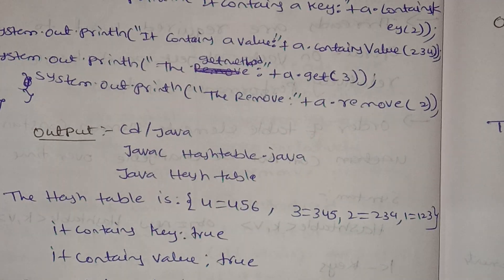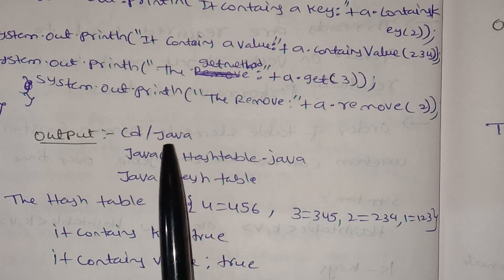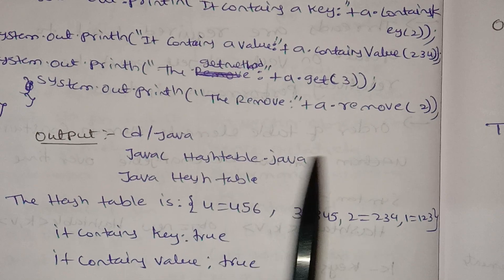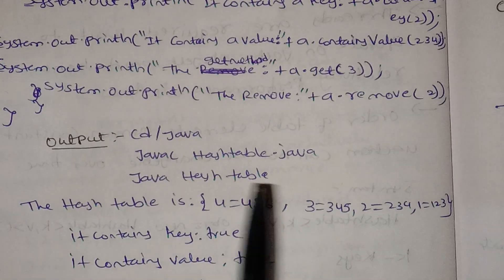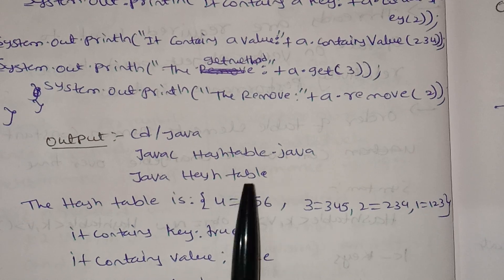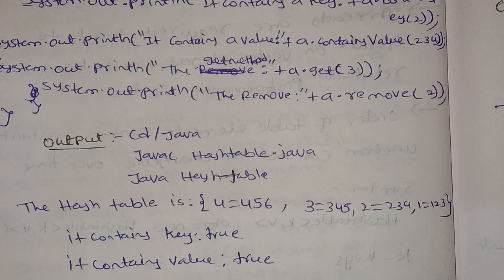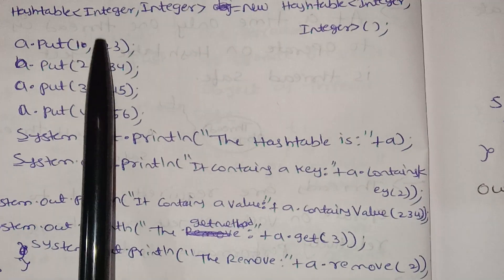Now I will compile the program. Running javac Hashtable.java to compile. After compilation, we run the Hashtable program and the hash table output is displayed.